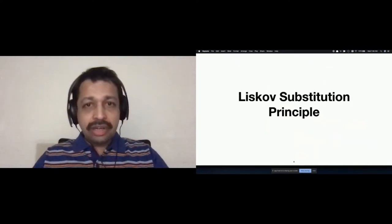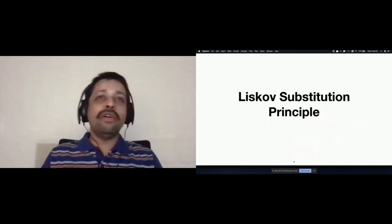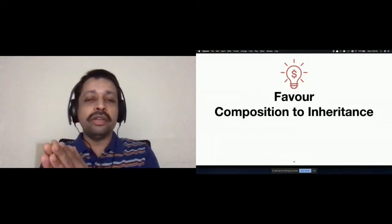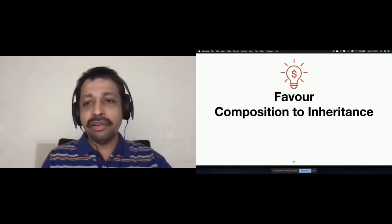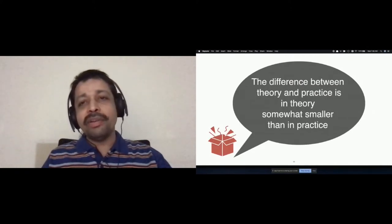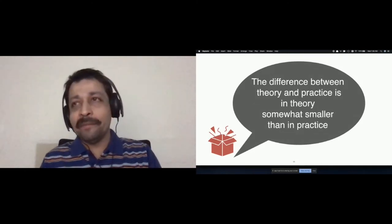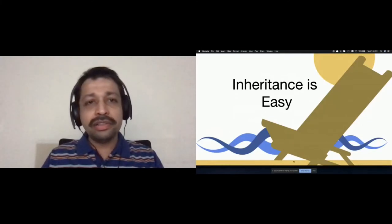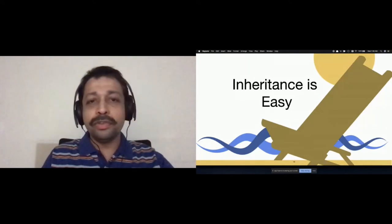We have heard this several times. In the object-oriented design perspective, this is mentioned in the Gang of Four book way long ago — favor object composition instead of class inheritance. If you want something very specific to Java, this is mentioned in the Java book too. But in spite of all these advices, the reality we see in projects mostly is: the difference between theory and practice is, in theory, somewhat smaller than in practice. People say they perfectly agree we have to prefer composition, but isn't inheritance easy to implement? That's what people tell when they use inheritance.